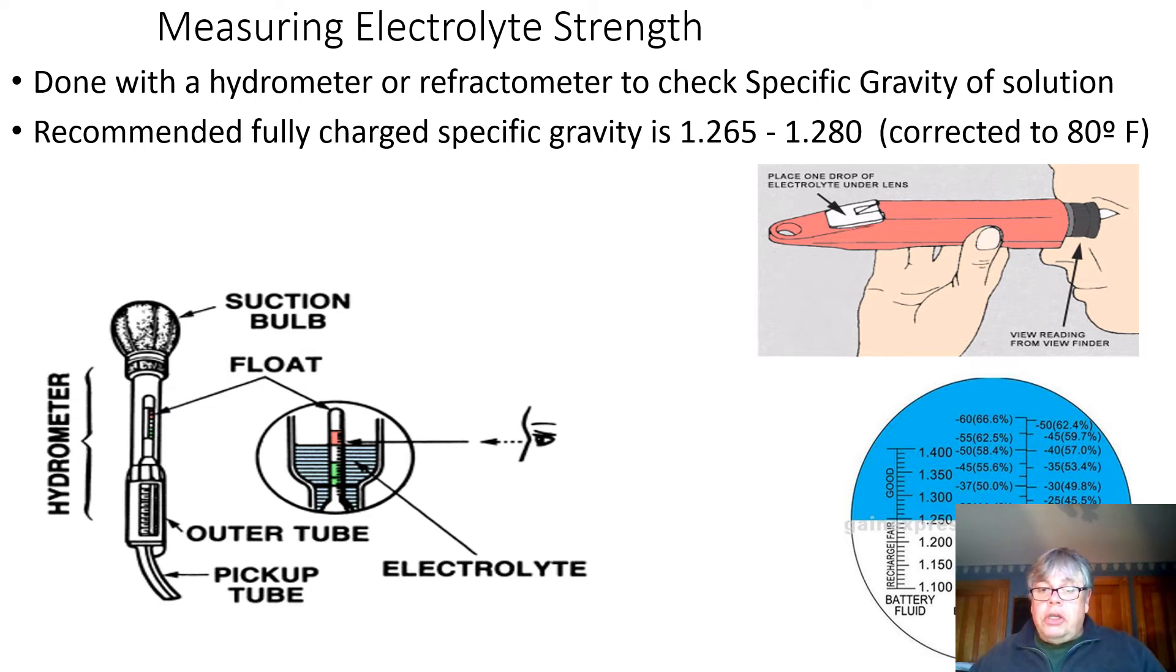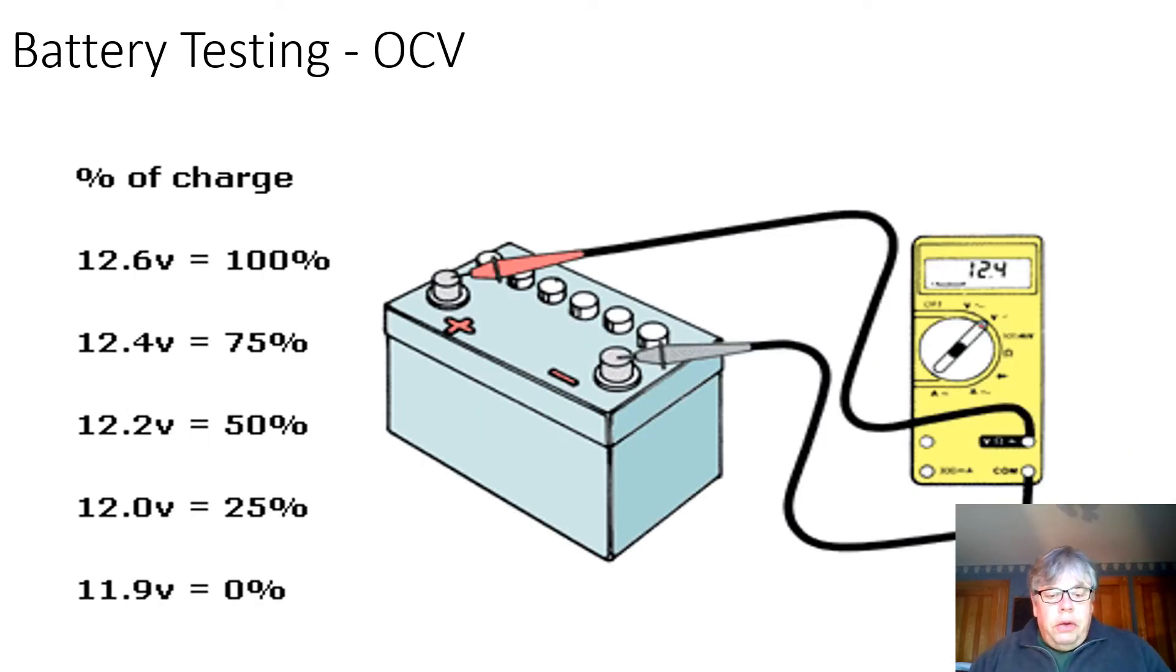The next test that we're going to do is open circuit voltage. Open circuit voltage measures the voltage without a load on the battery, so you're going just directly across the terminals with a multimeter. A fully charged battery has a voltage of 12.6 volts, as has been mentioned a lot of times in lecture and lab for this course.